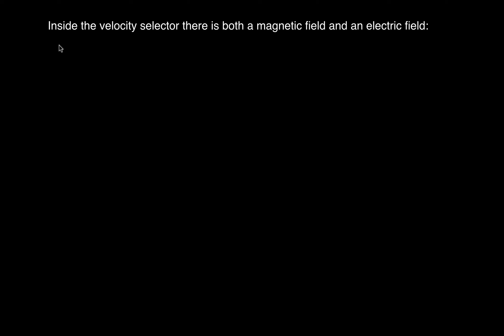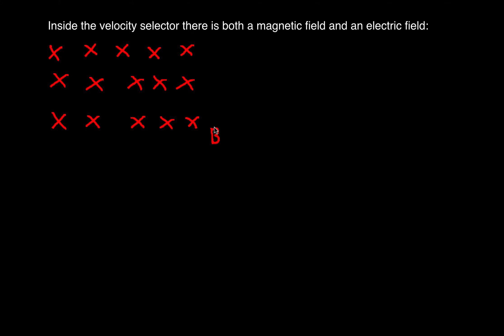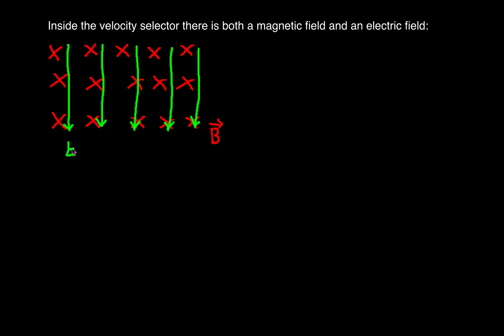Inside the velocity selector there is both a magnetic field and an electric field. We'll draw the magnetic field as pointing into the page. The electric field is perpendicular to the magnetic field — we're going to draw our electric field so it's pointing downward. Always in a velocity selector, the magnetic field is perpendicular to the electric field.